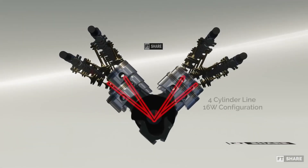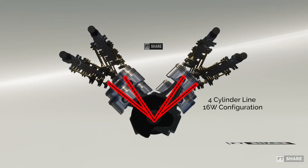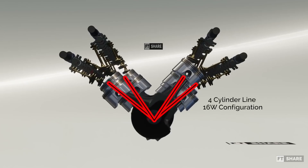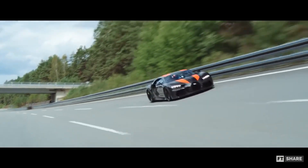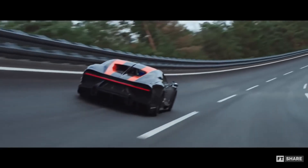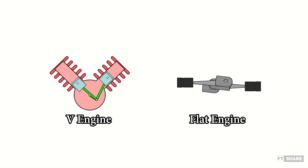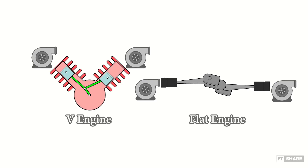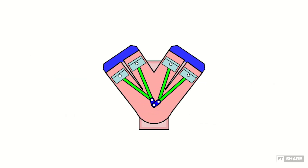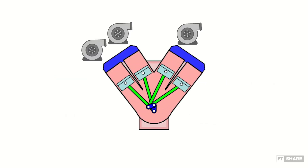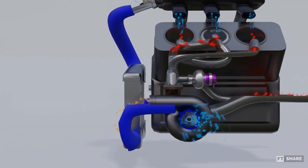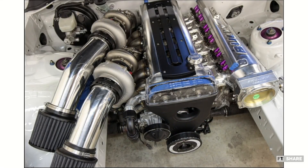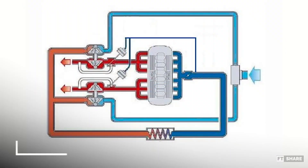However, it doesn't stop there. Parallel turbochargers are also used in engines with a W configuration, which have four banks of cylinders — for instance, the Bugatti Chiron and Bugatti Veyron. This means that V engines and flat engines use two turbochargers, while W engines with four cylinder banks use four turbochargers simultaneously. Occasionally, parallel turbocharger designs, such as the 2JZ engine, are used on engines with a straight four- or six-cylinder configuration.